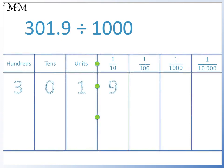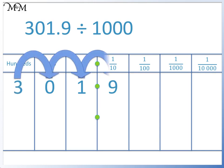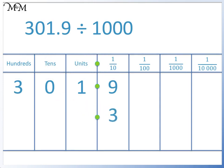301.9 divided by 1000. We are dividing by 1000, so we move each digit three places to the right. Starting with the 3, we move 1, 2, 3. We have moved the 3 to the tenths column. The rest of the digits follow. We need to make sure that we don't miss out the zero — we move this to the hundredths column. Finally, we write a zero in the units column. 301.9 divided by 1000 equals 0.3019.